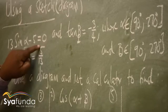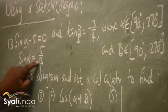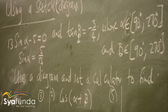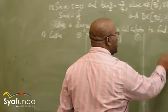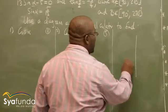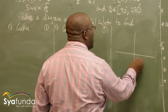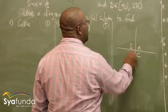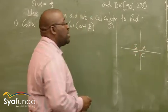Now I know the definition that sine is opposite over hypotenuse. I know which one is opposite and which one is hypotenuse. So sine alpha is opposite over hypotenuse in that diagram. Remember that opposite and hypotenuse only work in a right-angled triangle, so it means that I've got to have a diagram. Then you go to your Cartesian plane — your CAST diagram. CAST: C-A-S-T. This is what we refer to as the CAST diagram.